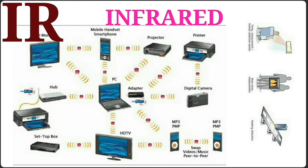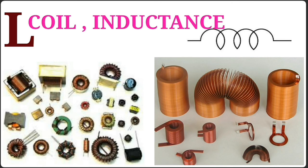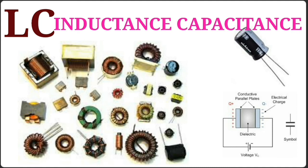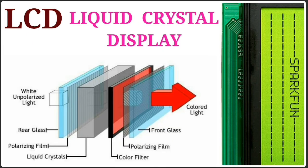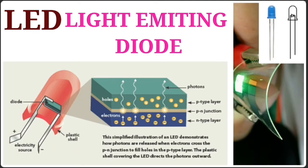JFET – Junction Field Effect Transistor. L – Coil or Inductance. LC – Inductance Capacitance. LCD – Liquid Crystal Display. LDR – Light Dependent Resistor. LED – Light Emitting Diode.